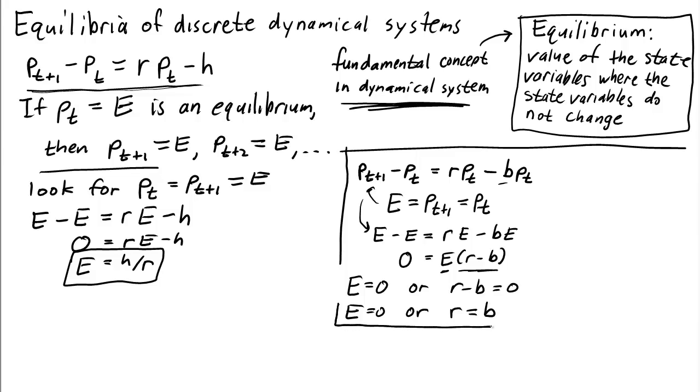What does this result mean? In the first case, we can see that e equals 0, or population size of 0, is always in equilibrium. No matter the value of either of the parameters r or b, we always know that having no individuals in the population is an equilibrium.